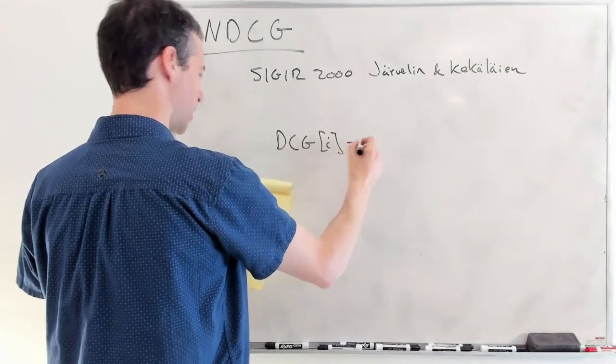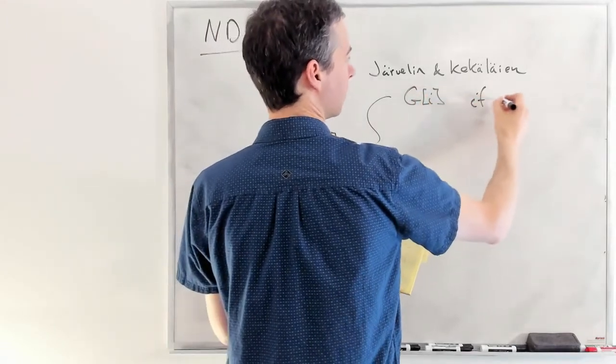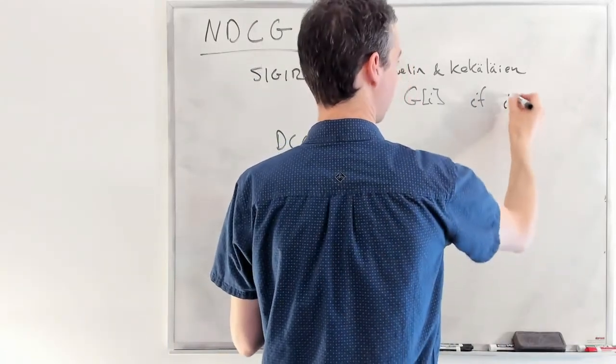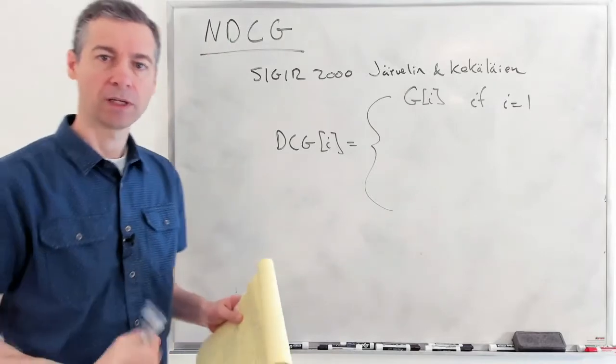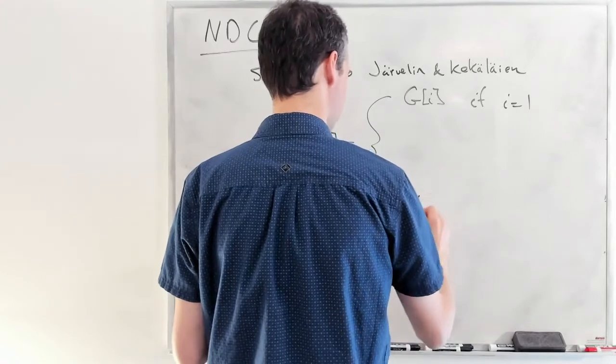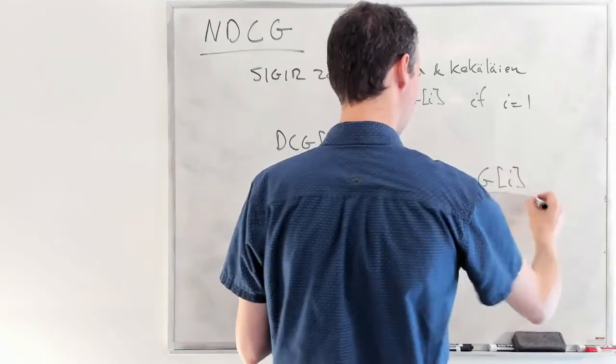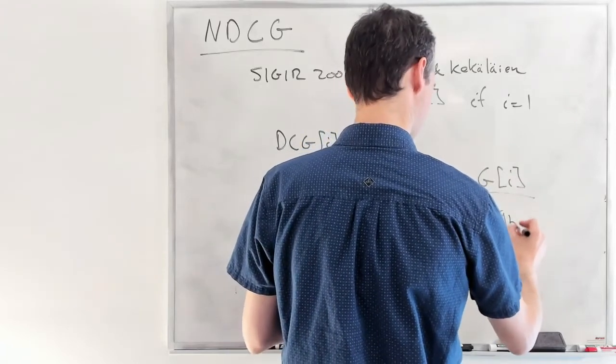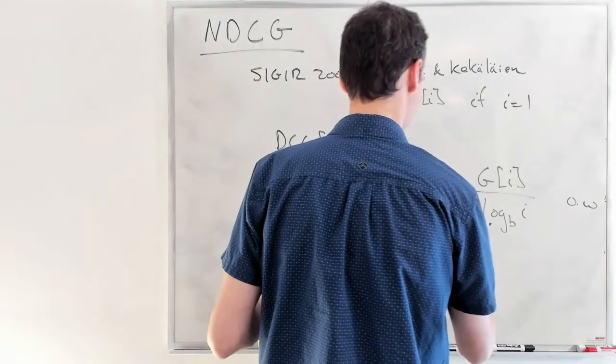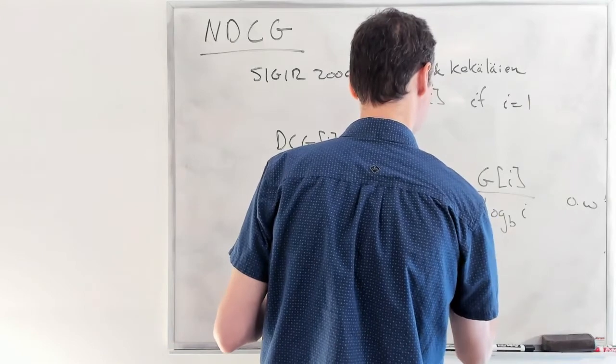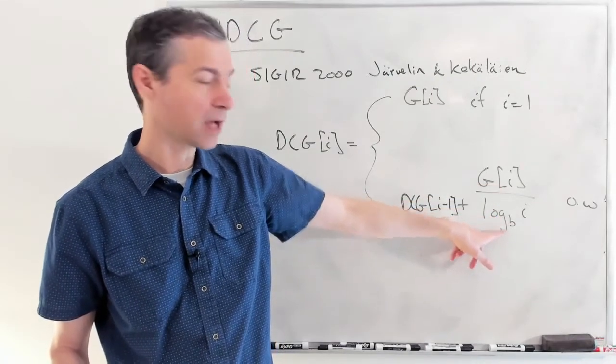And so their formulation looked as follows in the paper. When i is 1, at rank 1, you get back the gain value of that document no matter what. There's no discounting. So we're basically saying the user absolutely positively sees it. And then we have a recurrence here. If it's not rank 1, it's the previous value plus this rank gain divided by log to a base B.